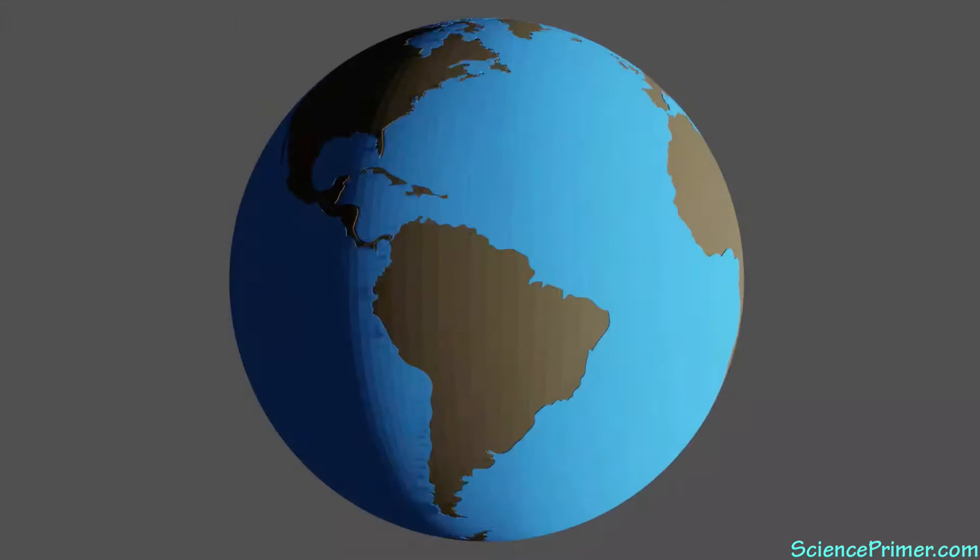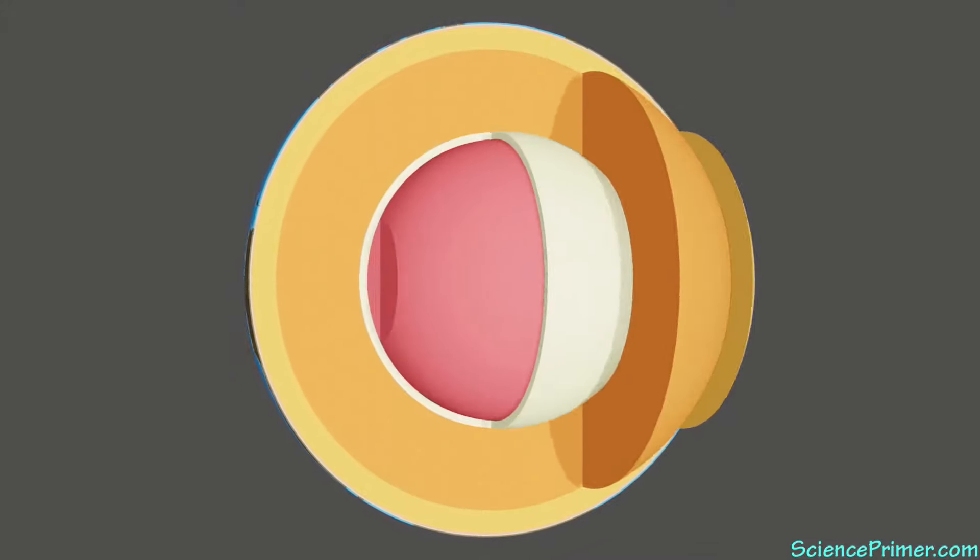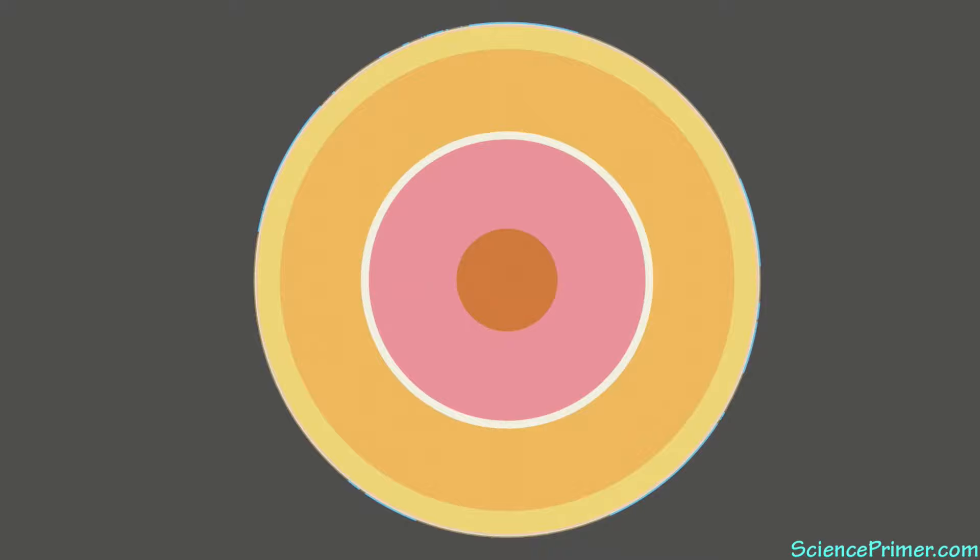It is pretty amazing just how much we know about the Earth's interior, given that we can only directly observe a tiny fraction of it. When we learn about the layers of the Earth, we are told that the crust is very thin relative to the overall size of the Earth. But that is only on the scale of the rest of the Earth.